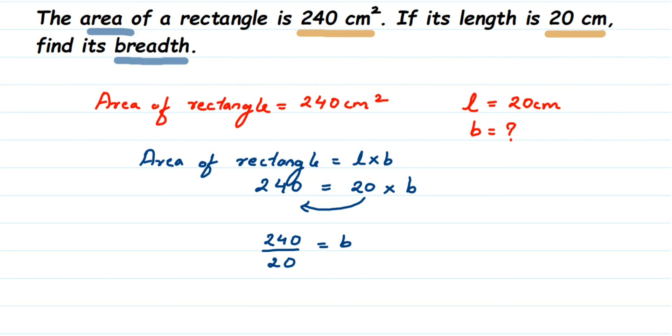Now cancel the numbers. You can cancel the zeros here. Now we have 2 and 24. Cancel this in 2 table. You can divide it. So 2 into 12 is 24. So here we got B value. B is equal to 12 cm.